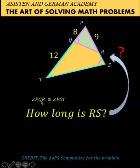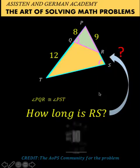and a line segment QR that intersects that triangle at points Q and R. It is given that angle PQR is congruent to angle PST. So this is angle PQR here, and this is angle PST. We would like to know how long is this segment RS. You can pause the video and see if you can solve this problem.